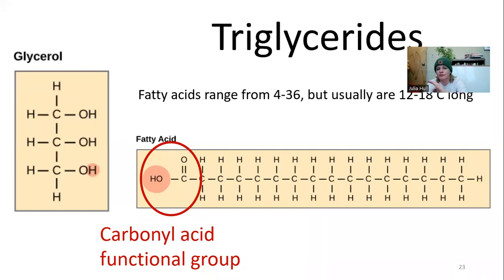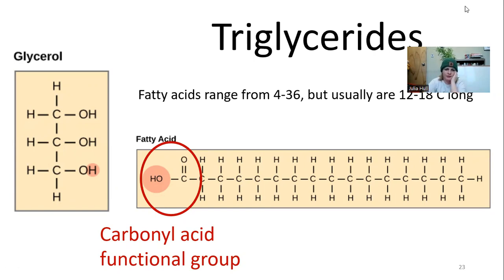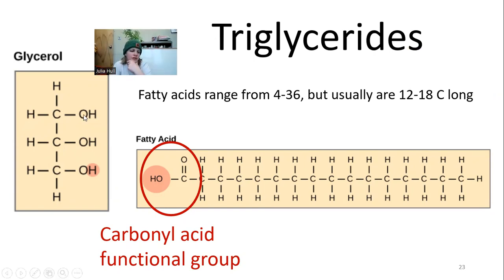Triglycerides are the first of our four major types of lipids. These have fatty acids — long chains that usually range from 4 to 36 carbon atoms, most commonly between 12 and 18 carbons long. Their structure includes a glycerol head, which is three carbons long with some OH groups, and the fatty acid has a carboxyl acid functional group. That's why we call it an acid, and the big long chain of carbons is why we call it a fat.